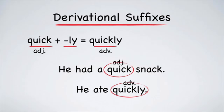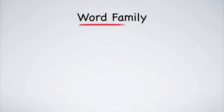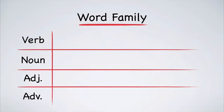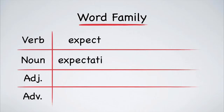Before we finish, there is one more important idea for us to look at, and that is the word family. A word family is all of the words that can be made from a single root. Take a look at this verb: expect. We can make the noun expectation. We could also make an adjective expectant, or the adverb expectantly.